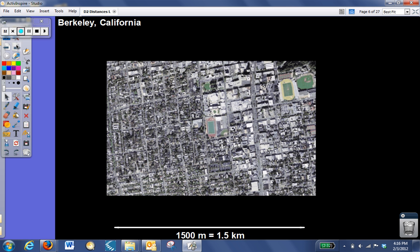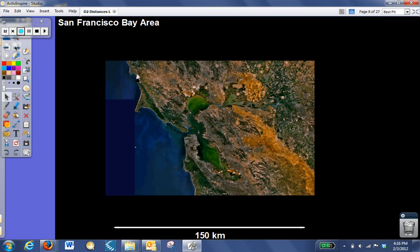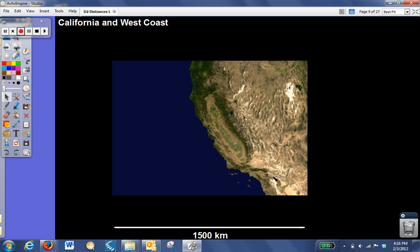If we go 10 times farther than that, now we're seeing most of the city of Berkeley. The football field would be right in the center, but it's now so small you can't see it. That's 15 kilometers. 10 times farther is 150 kilometers. Now you can see most of the San Francisco Bay Area with the city of Berkeley up here and the rest of the Bay Area. 10 times farther is 1,500 kilometers. All of California would fit in that.